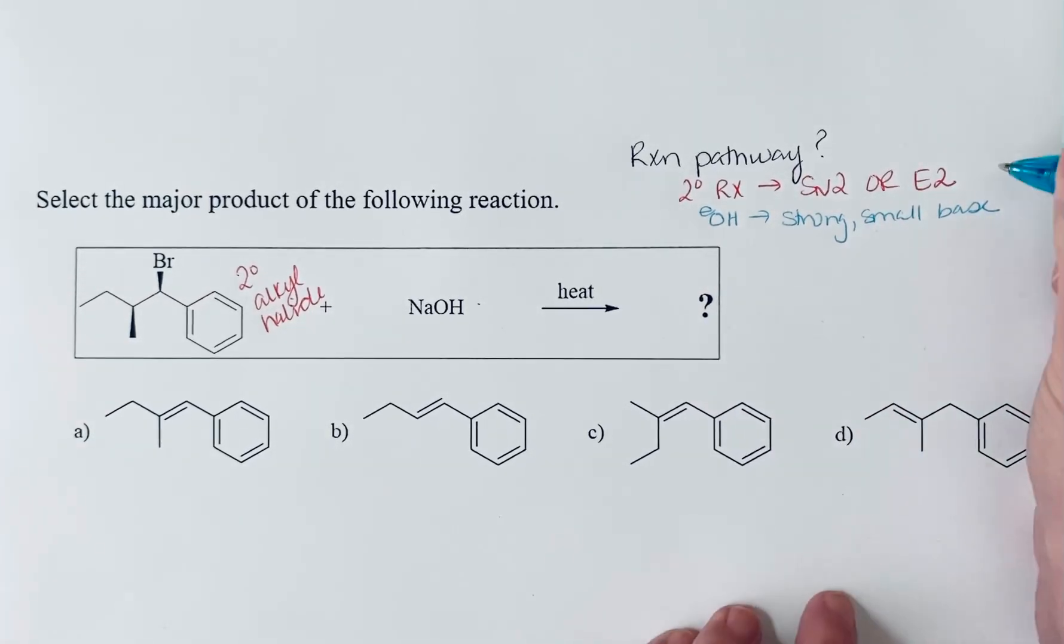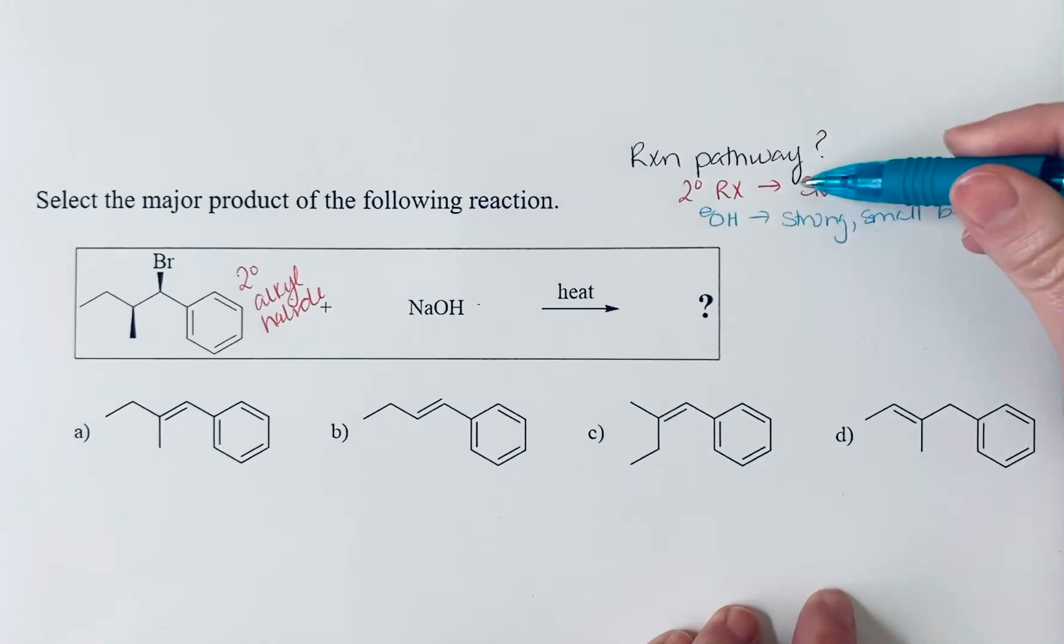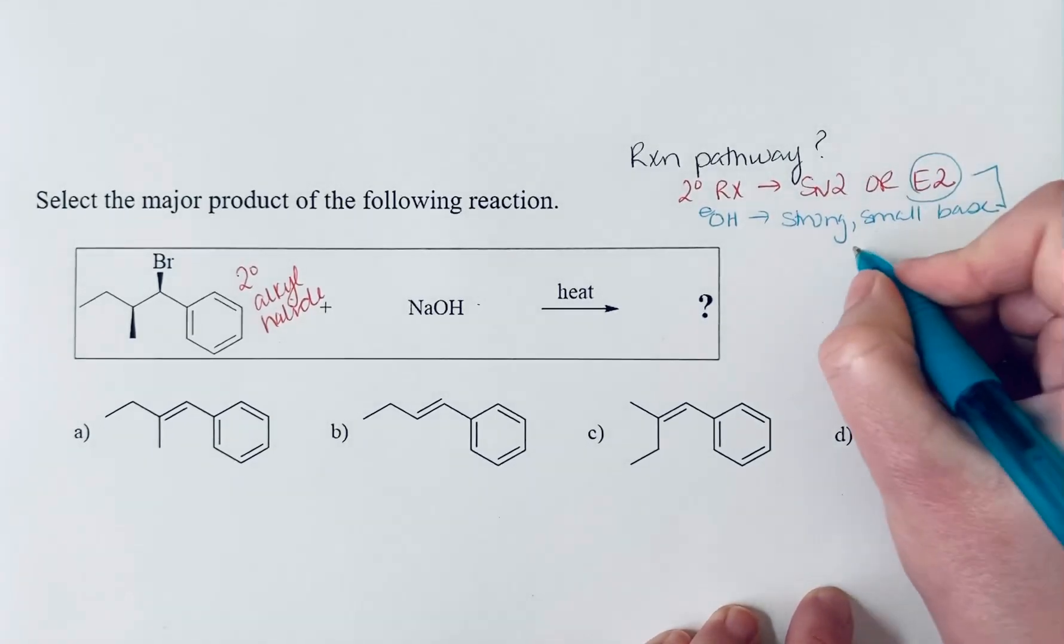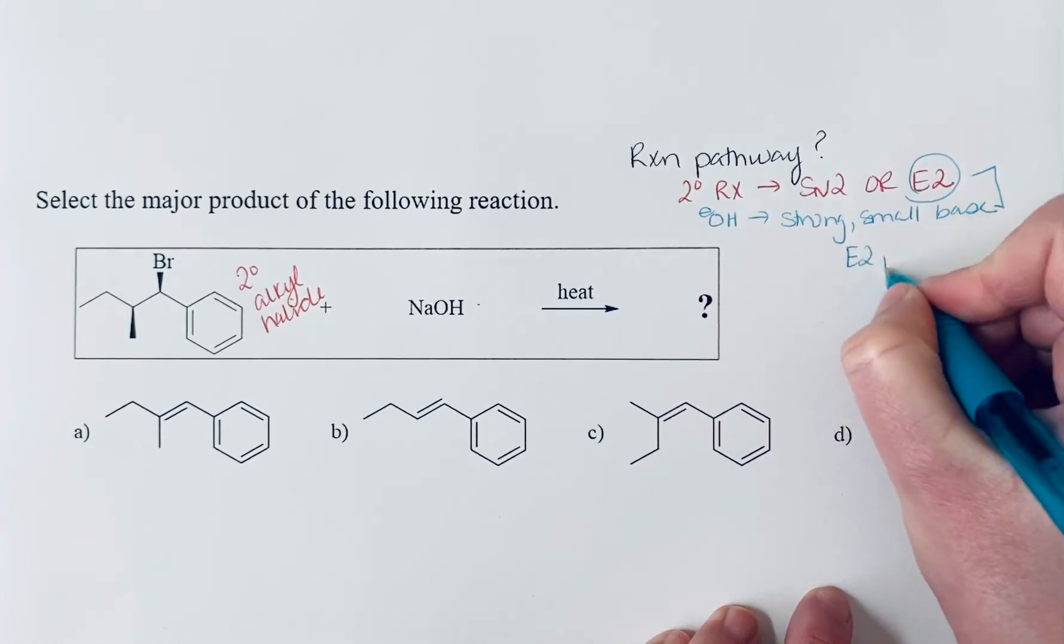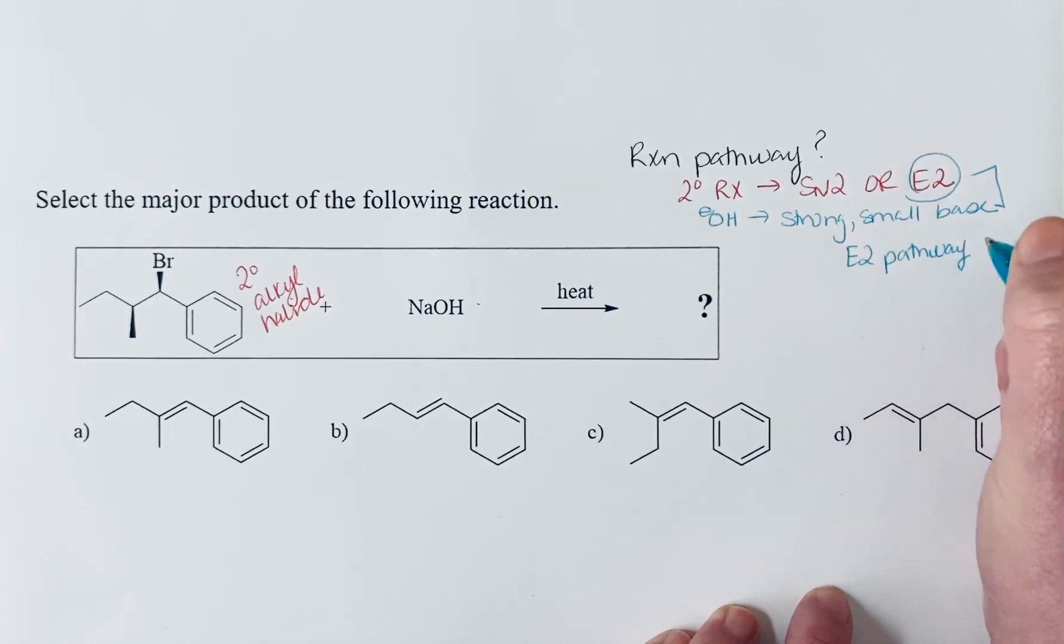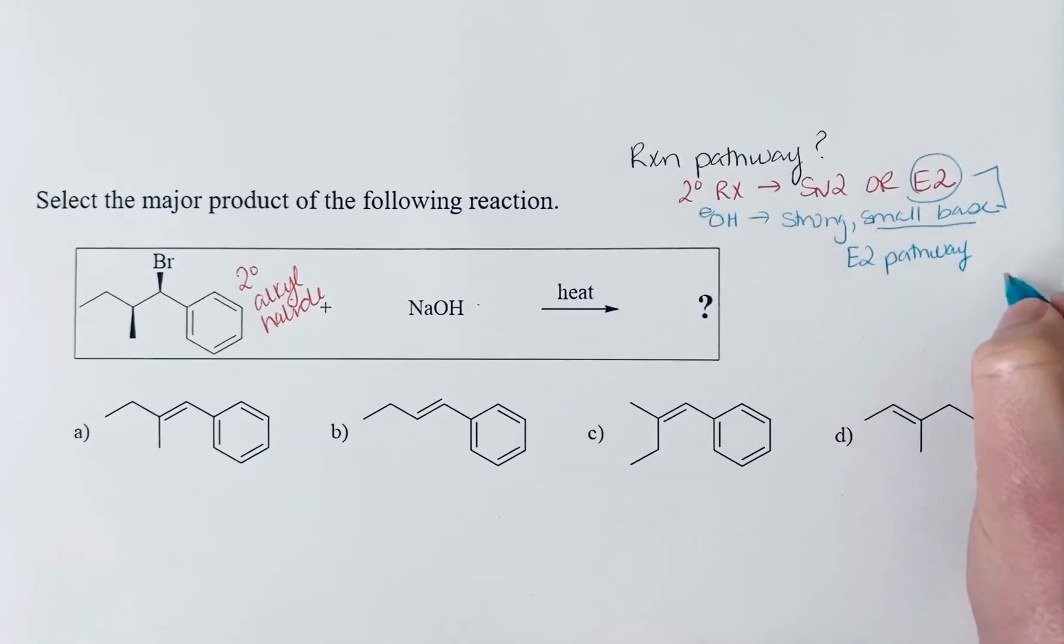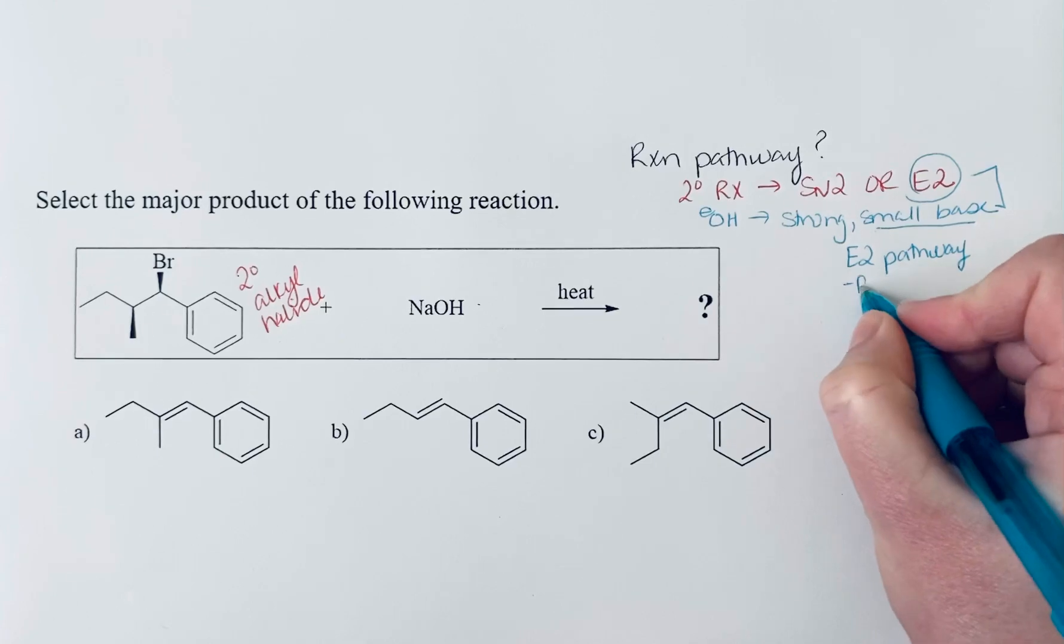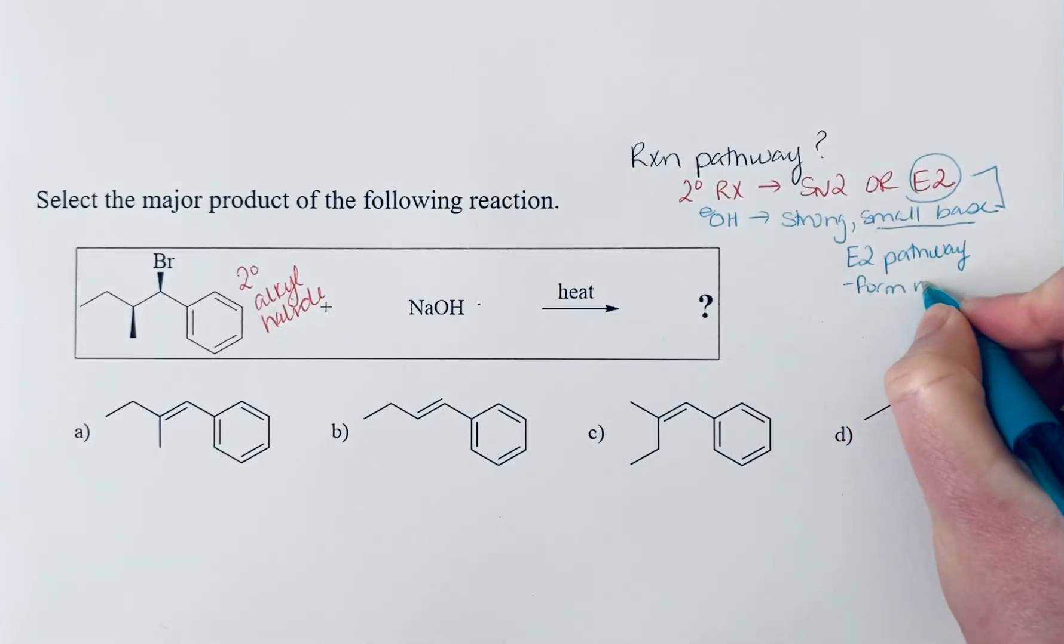So with these two things together - a secondary alkyl halide and a strong small base - we're going to tend towards the E2 pathway. And because that base is small, we are going to form the most stable alkene.